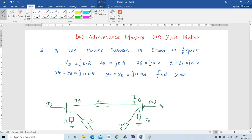A 3 bus power system is shown in figure. Z2 is j0.2, Z5 is j0.4, Z8 is j0.2.